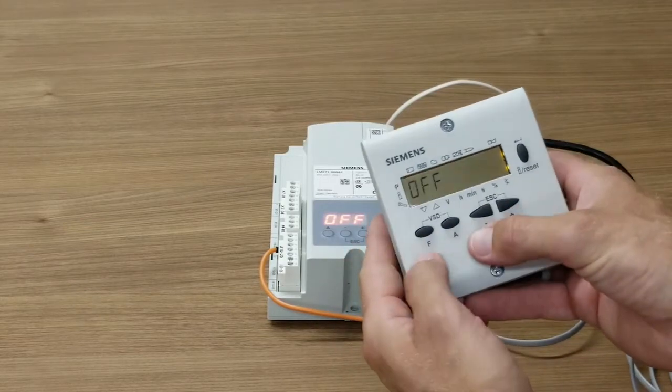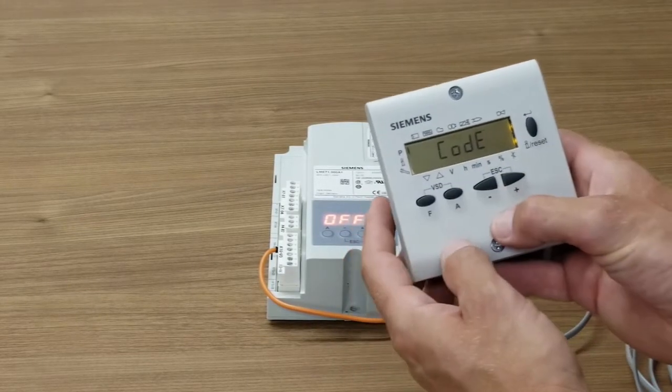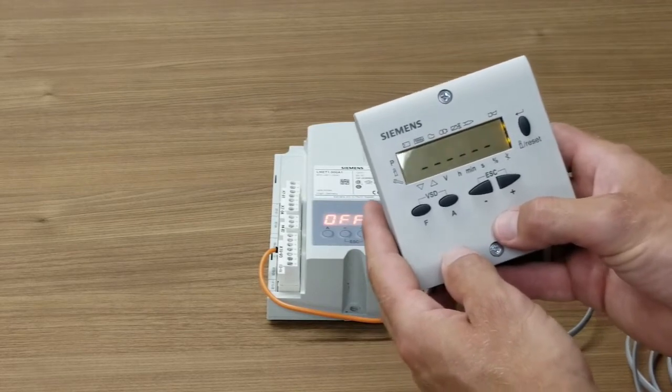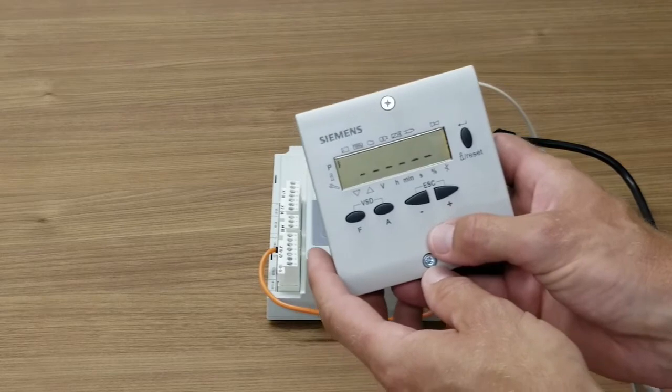To log in, press and hold the F and A buttons until the word code appears, and then let go. You should now see several underscores with the first one flashing. This is prompting you for a password.